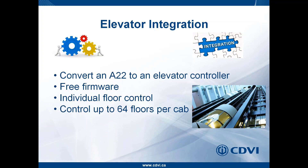Since one A22 accommodates two readers, you can do two cabs per A22 — 64 floors per cab gives 128 floors per A22. The Atrium system overall can accommodate up to 256 floors. For example, a building with eight floors can run eight floors times two cabs across multiple A22s, provided the total doesn't exceed 256 floors.